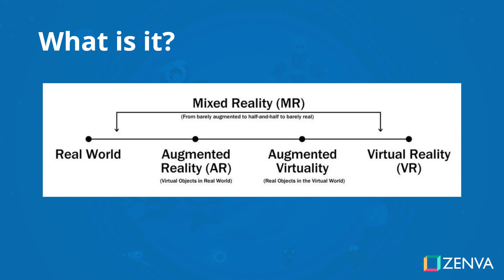What you're seeing here is the mixed reality spectrum. It goes from the real world on the left all the way over to virtual reality on the right. And in between we have a few things. Towards the left we have augmented reality, and this is normally the technology you'd see in things such as mobile devices where virtual objects are placed in the real world. Think Pokemon Go or any sort of application that puts stuff in the world such as furniture apps, measuring apps or even educational apps.